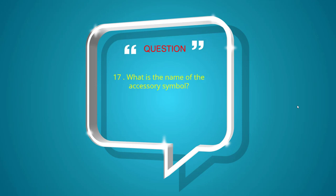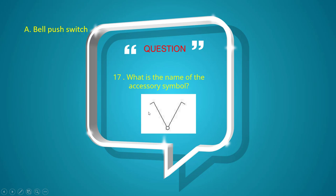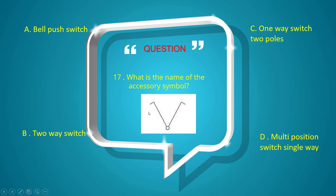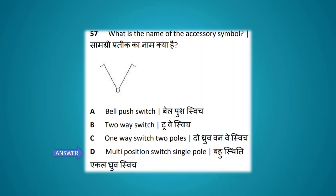What is the name of the accessory symbol shown? Options: bell push switch, two-way switch, one-way switch, two poles, multi-position switch. The answer is multi-position switch, single pole.